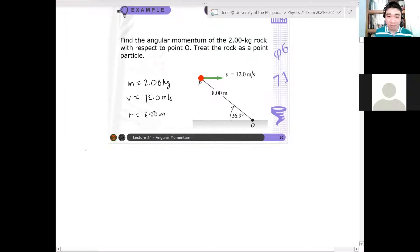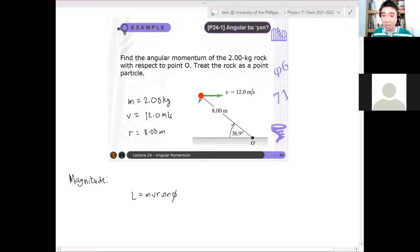Ngayon, so the magnitude can be easily shown, can be easily obtained. It's just L is MvR sine phi. Ang question na yung, ano yung phi? Ano yung phi? So from this diagram here, what I can do is, I can extend this.